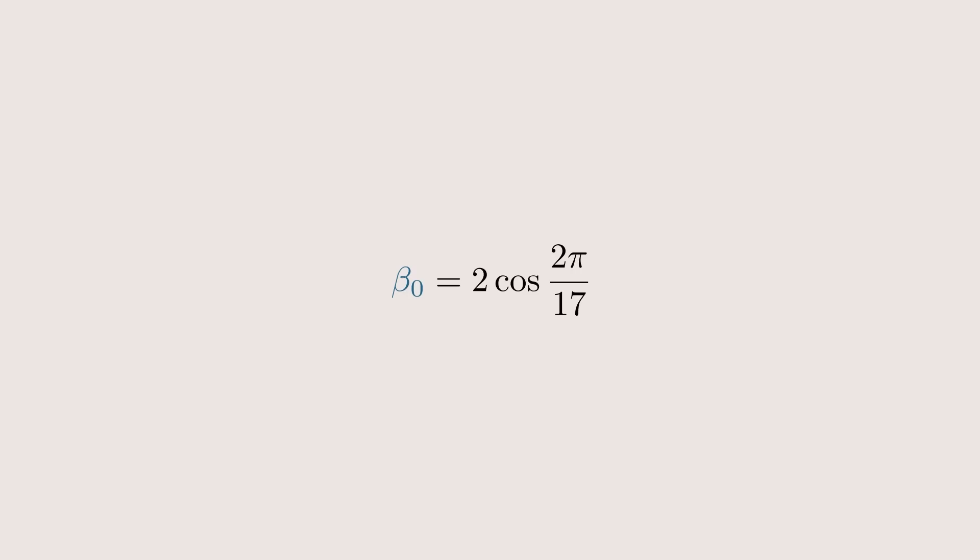Actually calculating β₀ is just like the previous numbers. β₀ plus β₄ is μ₀ per definition, and their product evaluates to μ₁. This gives us the following quadratic equation, which we can again solve with the Carlyle circle.